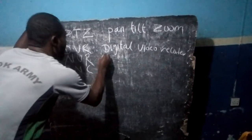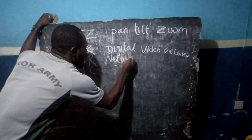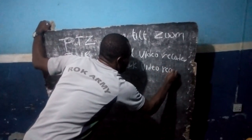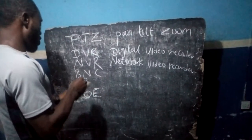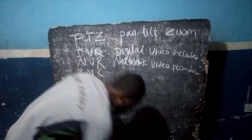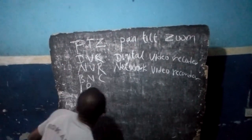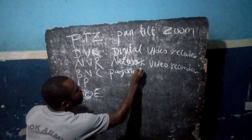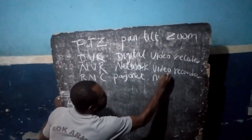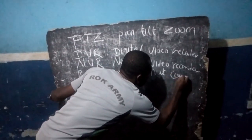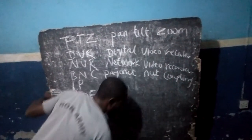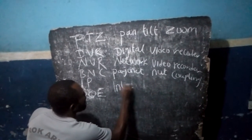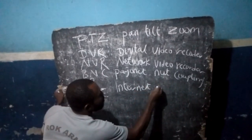NVR simply means Network Video Recorder. When you come to BNC, BNC simply means Bayonet Neill Concelman — that is, Bayonet, Neil, Coupling. This is the meaning of BNC. When you talk about IP, IP simply means Internet Protocol.